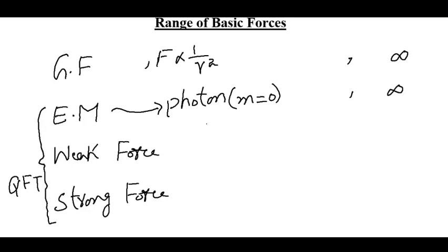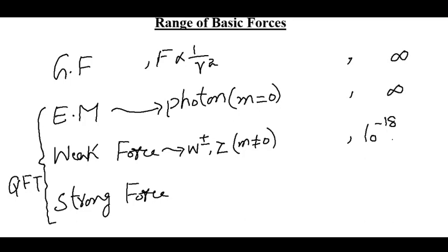The third force is the weak nuclear force, and it is mediated by three gauge bosons: the W⁺ boson, the W⁻ boson, and the Z boson. All three bosons are quite heavy — their mass is not equal to zero. Due to their extremely heavy mass, the range of the weak force is extremely short, less than 10⁻¹⁸ meters, which is about the size of an electron or quark. So the weak force is extremely short range due to the heavy mass of these gauge bosons.